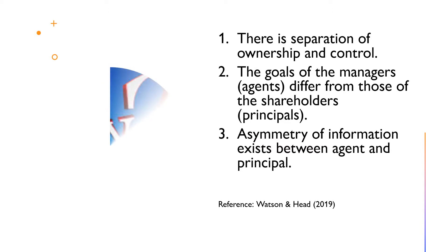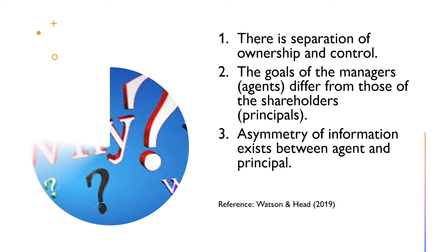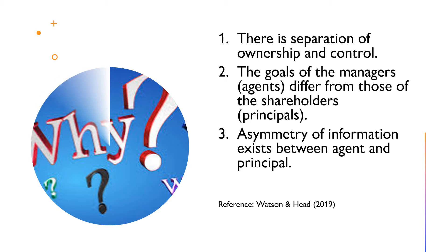Why do agency problems exist? Watson and Head highlight three reasons. First, there is a separation of ownership and control, whereby those who own the company — the shareholders — do not manage it, but appoint agents, the managers, to run the company on their behalf. The ownership of most large companies is widely spread, while the day-to-day control of the business rests in the hands of a few managers who actually own a relatively small proportion of the total shares issued.